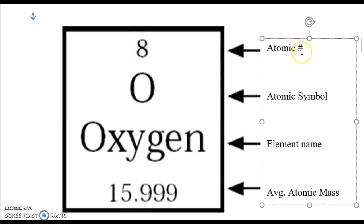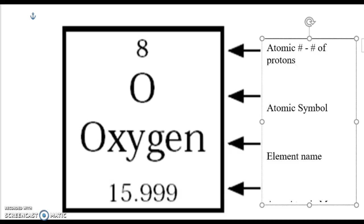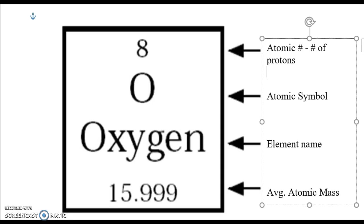That number at the top is called the atomic number. What that means is it's the unique number that sets that element apart. Elements are defined by this number, and if you remember from the basics of an atom, the atomic number is the same as the number of protons. If an atom has a different number of protons, it's a different element entirely.